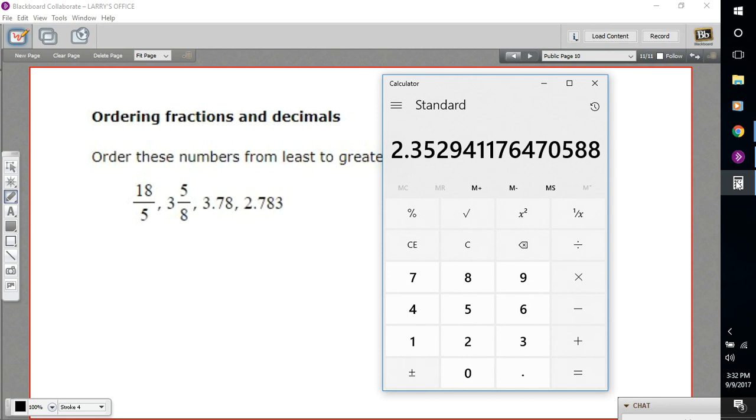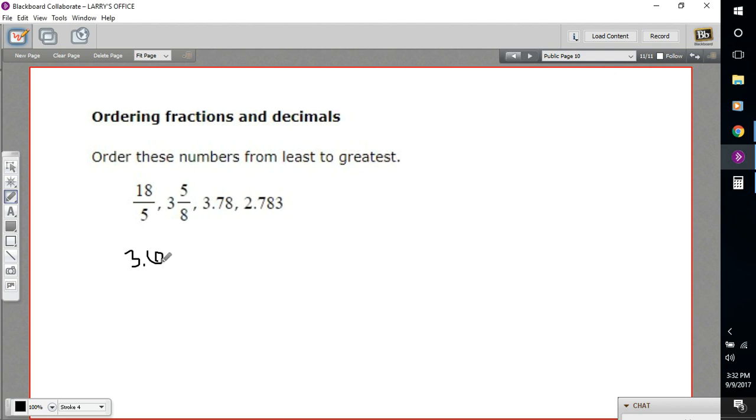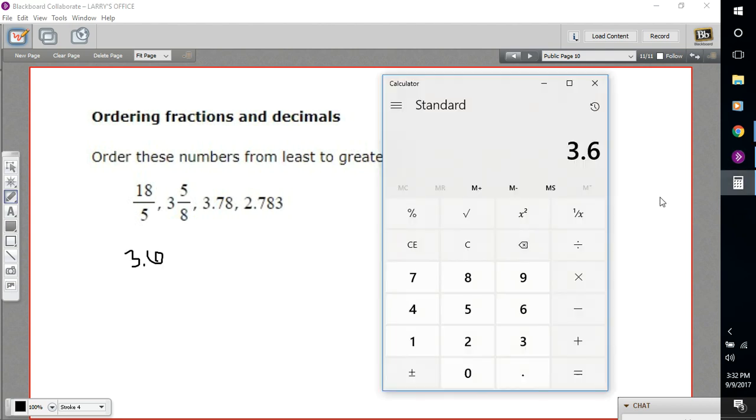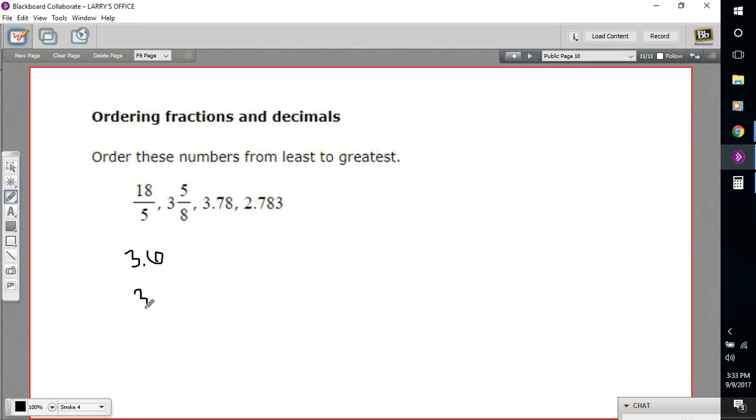So I'm going to pull out my calculator. 18 fifths, that's 18 divided by 5. So that is 3.6. And 3 and 5 eighths, well, let's take the 5 divided by 8, and then we'll add 3 to it. So that's 3.625.